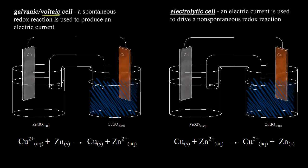A voltaic cell uses a spontaneous redox reaction to produce an electric current. Starting at our zinc electrode, solid zinc turns into zinc two-plus ions. An atom of zinc loses two electrons to become zinc two-plus. Loss of electrons is oxidation, and oxidation is occurring at our zinc electrode, so the zinc electrode must be our anode. Remember, oxidation occurs at the anode — you can remember that by 'anox.'